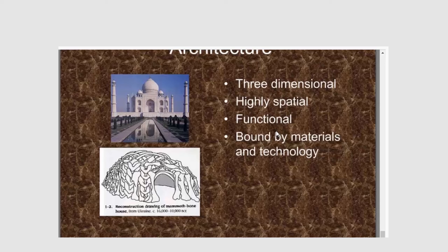The image on the bottom is an image of a mammoth bone house from the Ukraine, made around 16,000 to 10,000 BCE. The thing about architecture is this: it's three-dimensional and made so people can go inside, so it's highly spatial whatever the design might be. It always has some kind of function — whether it's a place that people live, worship, or gather — it's built for humans to have a use of some form.